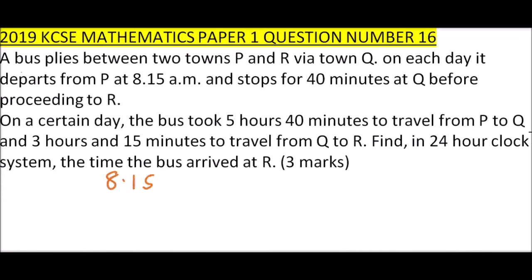In 24-hour clock we start with 0 when it is a.m. So it took 5 hours 40 minutes to travel from P to Q, so we add 5 hours and 40 minutes. When you add this, 8 plus 5, you get 13:55.